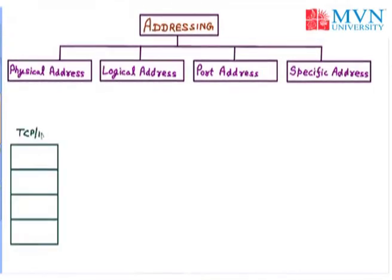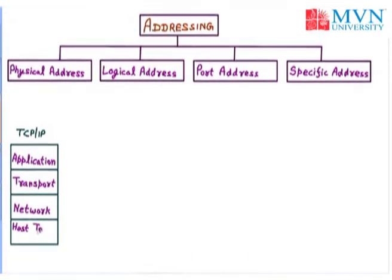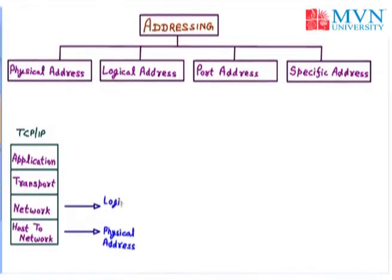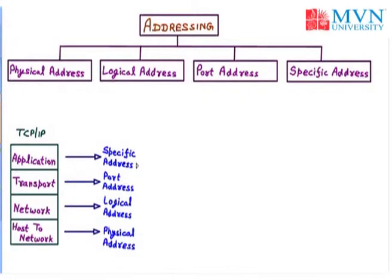So let us talk about the TCP/IP model. In the TCP/IP model, we have four layers. The first layer is the application layer, next we have the transport layer, then the network layer (also called the internet layer), and lastly we have the host-to-network layer. After each layer, we have a specific set of addresses. At the host-to-network layer, we use the physical address. At the network layer, we have the logical address. At the transport layer, we have the port address. And at the application layer, we have the specific address. We will now discuss each address one by one.